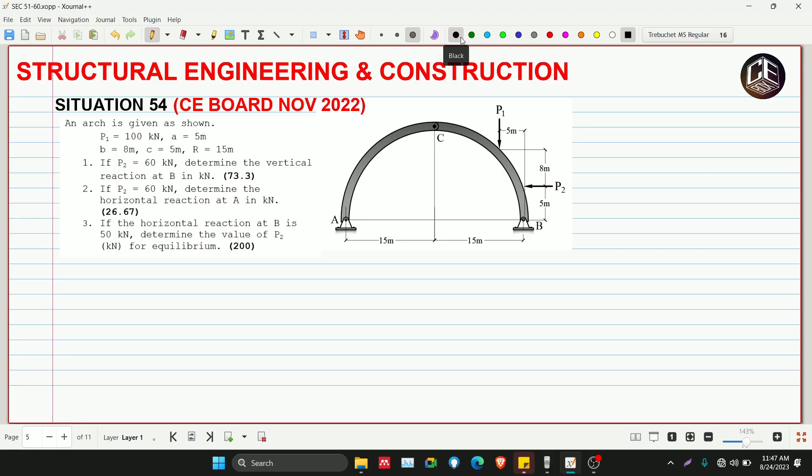Hello guys, welcome back to CEBOX tutorial channel. This is situation number 54 from CE Board exam November 2022 for Structural Engineering and Construction. Before we start, please subscribe and hit the bell icon for notifications. An arch is given as shown, with forces and dimensions. Let's label P1 as 100 kilonewtons, P2 with no given value yet, and dimension A as 5 meters. This is our support A which is a pin support, B is also pin, and this is our connection at C.